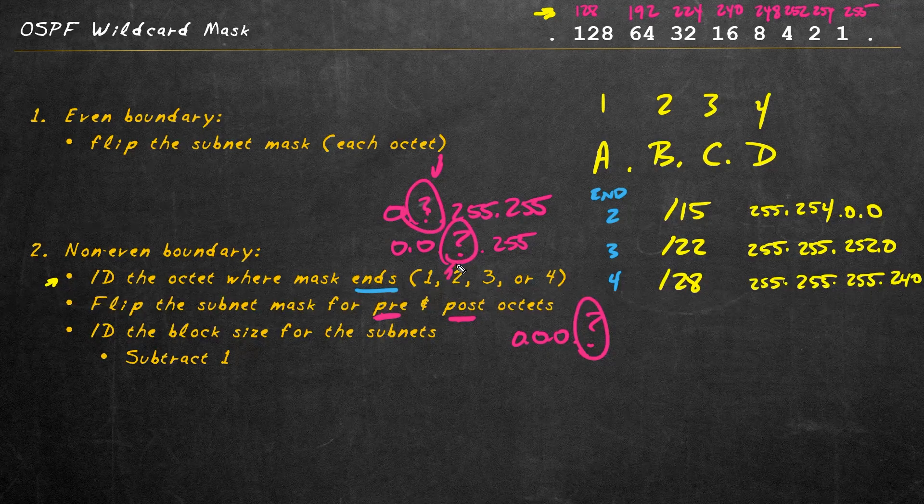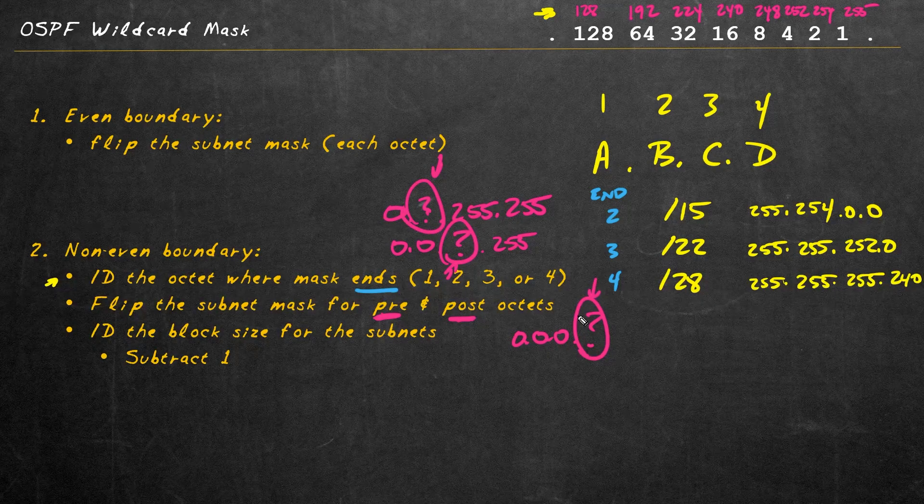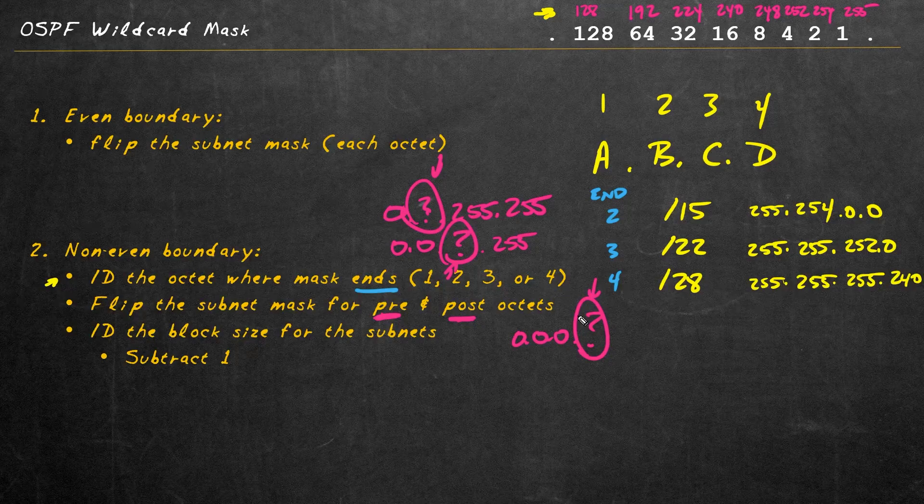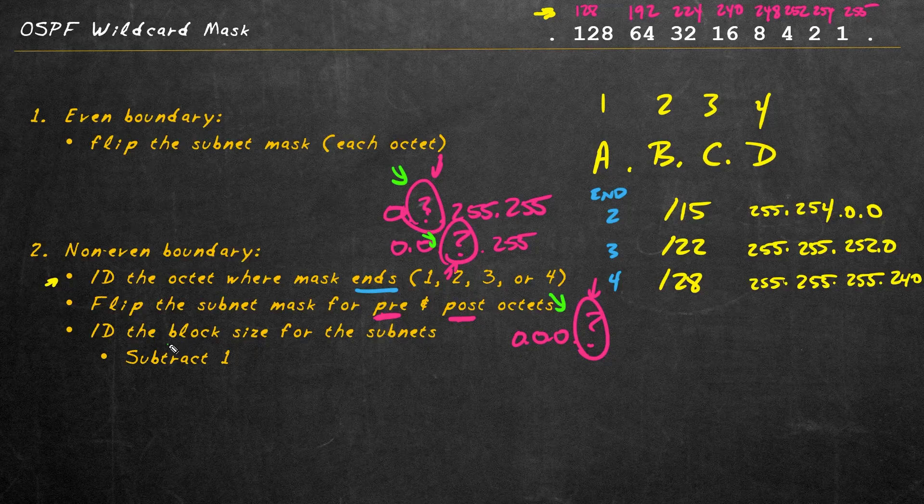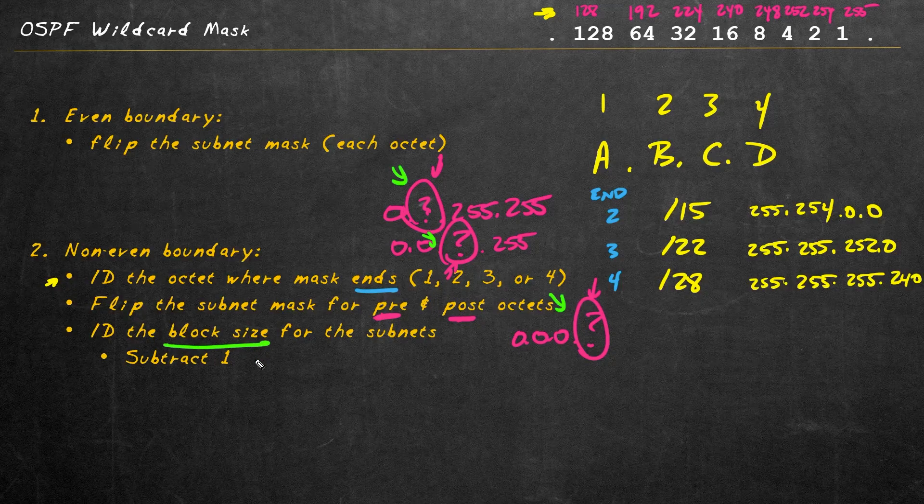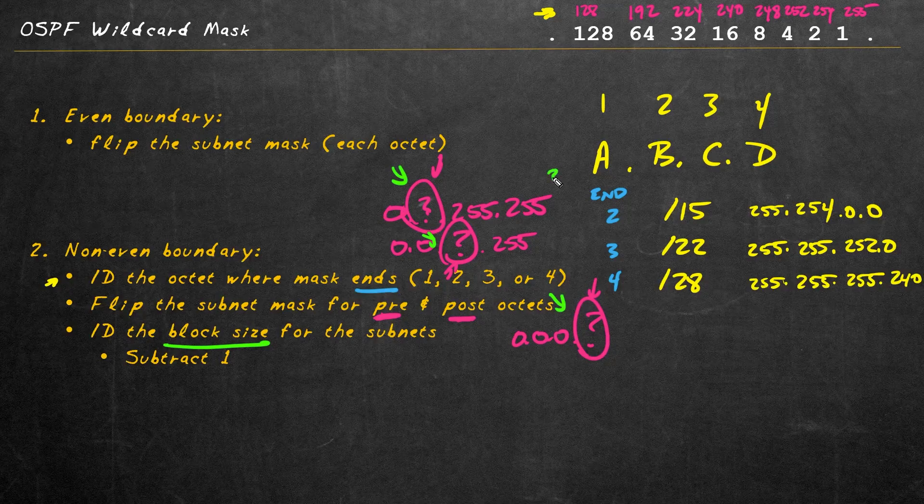The shortcut to calculating that value for that octet, the shortcut to identify that value right here, is to identify the block size, which we've covered in our Subnet Saturdays for each one of those networks. Let's go ahead and do that real quick. I'll put 'block size' right here.